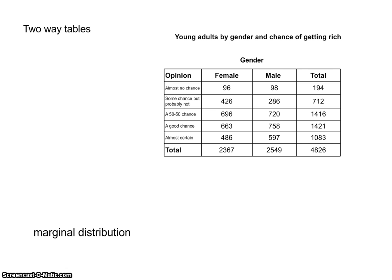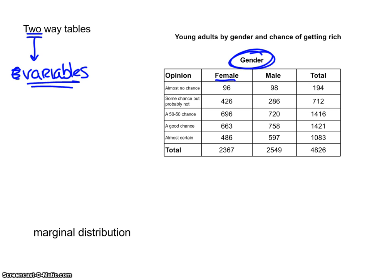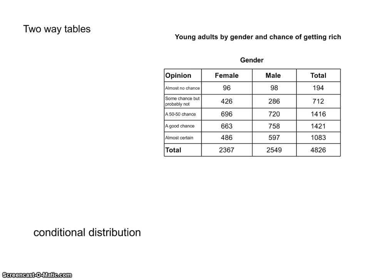Next is the two-way table, used when we're looking at two categorical variables. One variable is gender — female or male — and the other is opinion. The data goes both horizontally and vertically, comparing two values. A marginal distribution refers to the totals, like the margins of your paper. For example, what percent say 'almost no chance' — that's 194 out of 4,826 — or what percent are male — 2,549 out of 4,826.